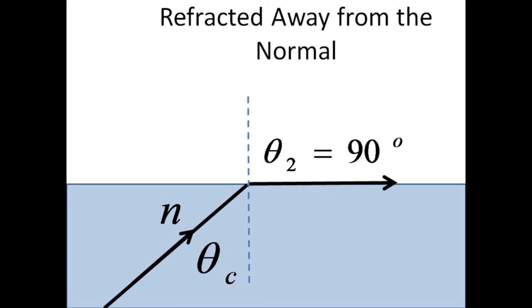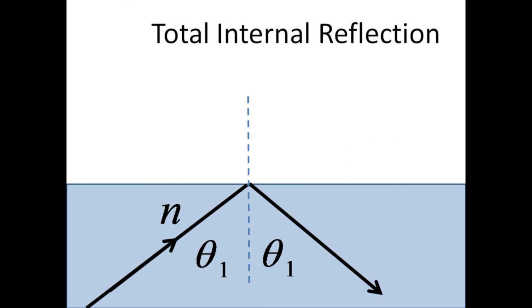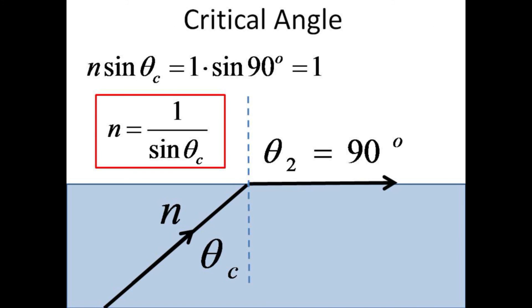At the critical angle, the ray is refracted to exactly a 90 degree angle. Any angle of incidence greater than the critical angle leads to a totally internally reflected ray. The critical angle is related to the index of refraction of the material. Again, applying Snell's law, we find that n sine theta c is equal to 1 times the sine of 90 degrees. Solving for n gives the index of refraction as the reciprocal of the sine of the critical angle.